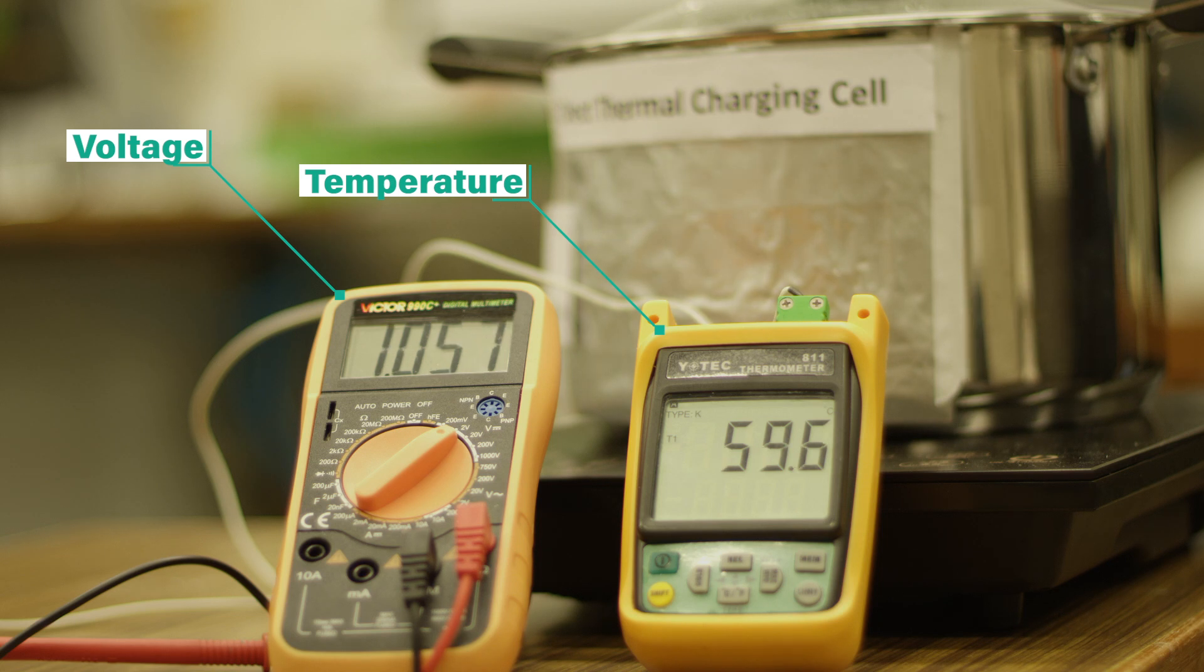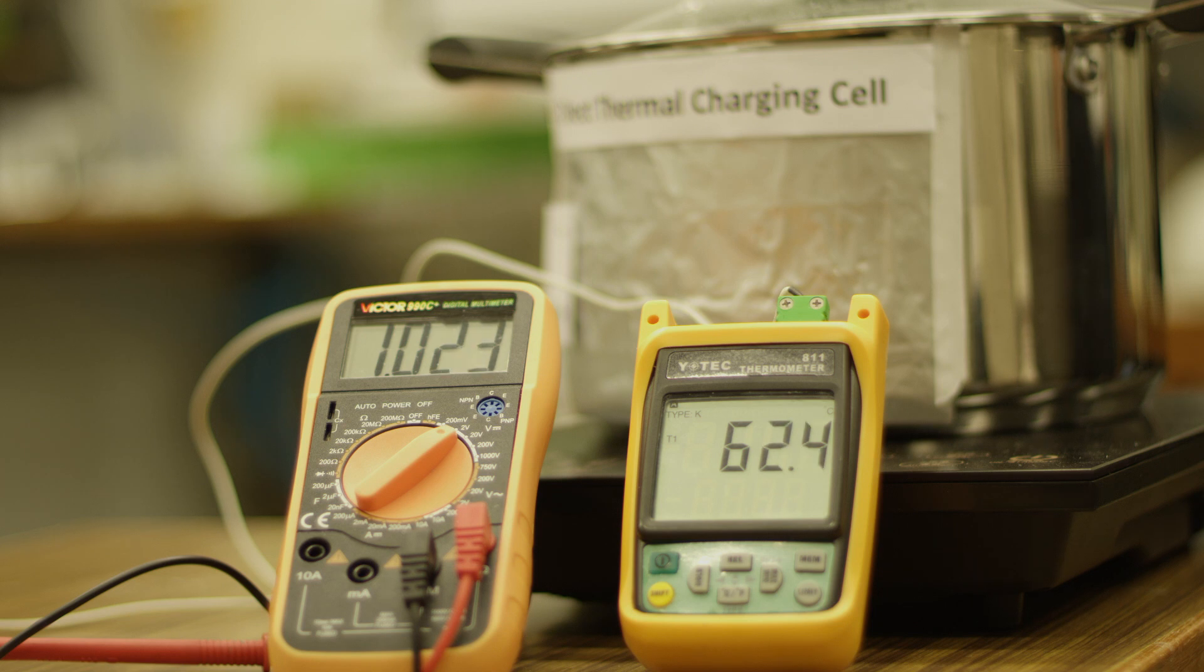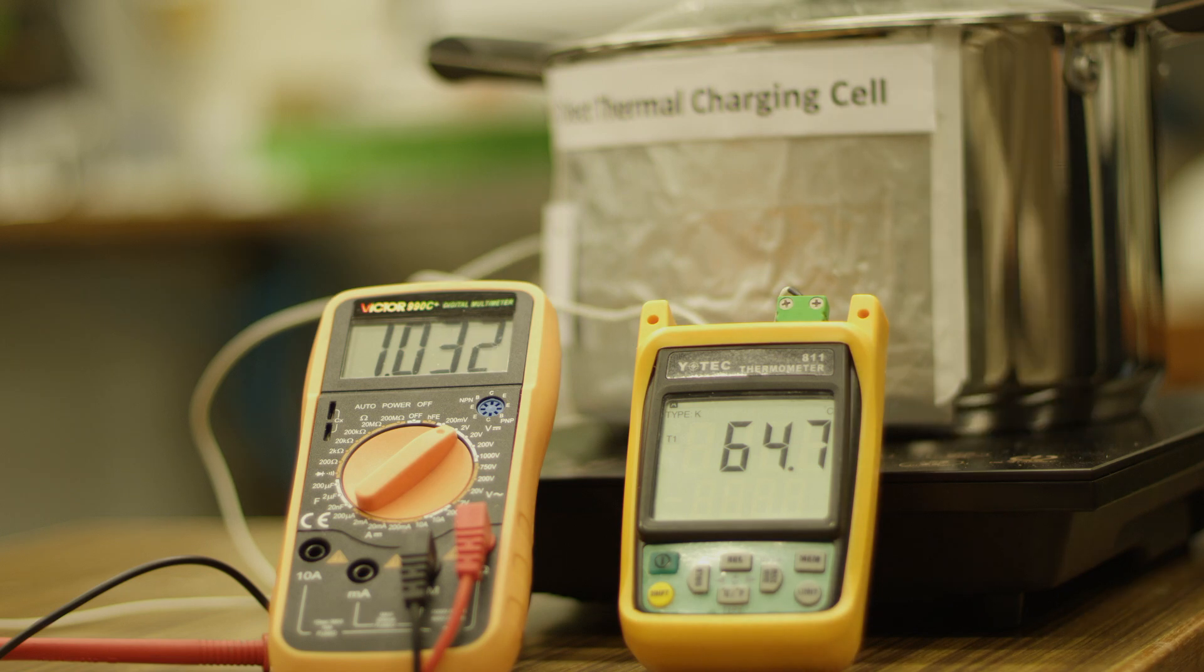One is from the thermally induced pseudo capacitive effect of graphene oxide. When you heat the graphene oxide up, the reactions can absorb the protons from the electrolyte and this will induce a higher voltage. The other part is the thermogalvanic effect from the electrolyte due to the intrinsic properties of the ferrous electrolyte.